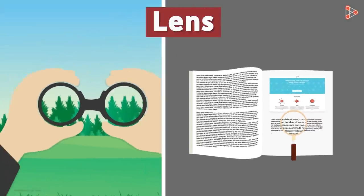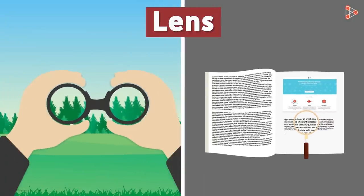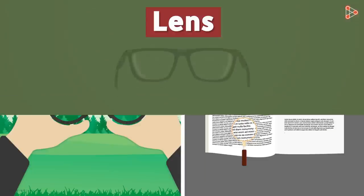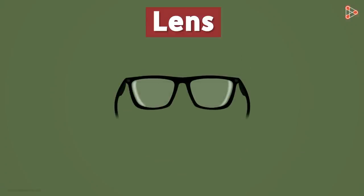The two lenses in binoculars make objects appear nearer to us. We use a magnifying lens to see tiny things, and it has a lens in it. There are two kinds of lenses used in spectacles, which we wear if we are suffering from certain eye defects.